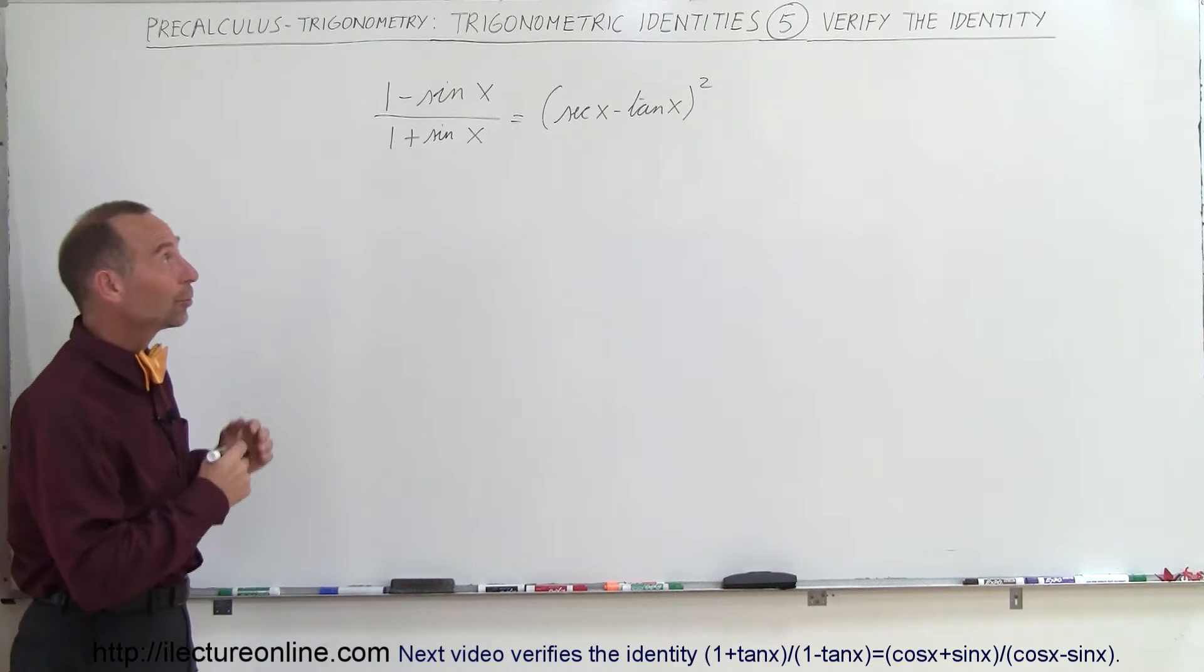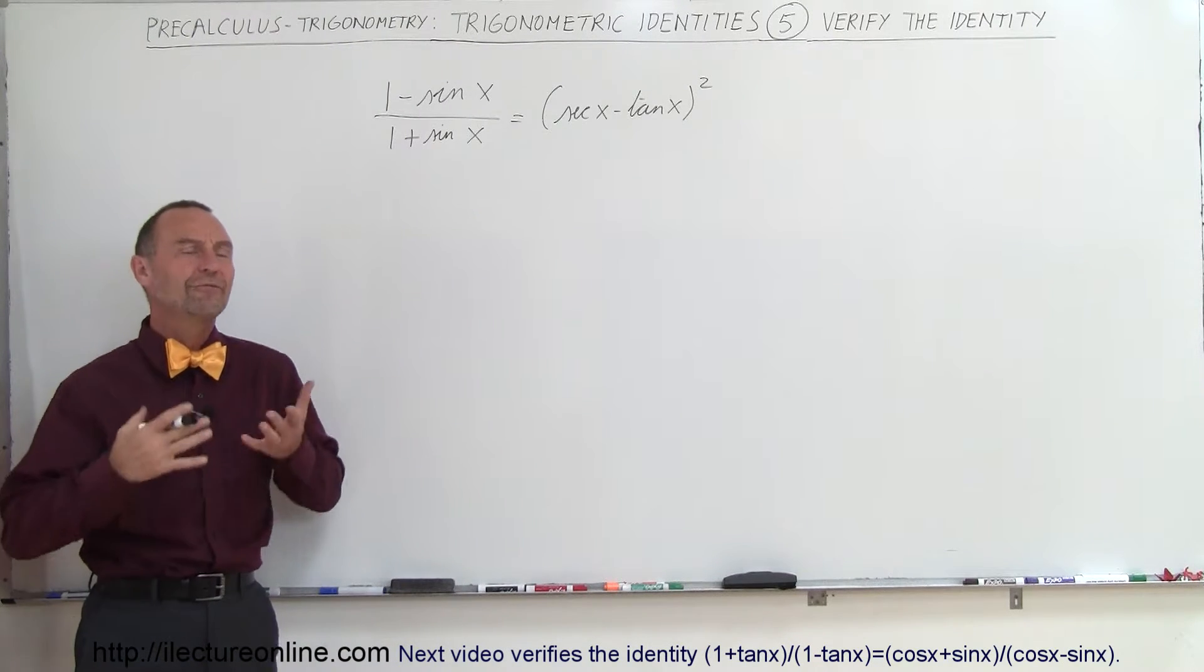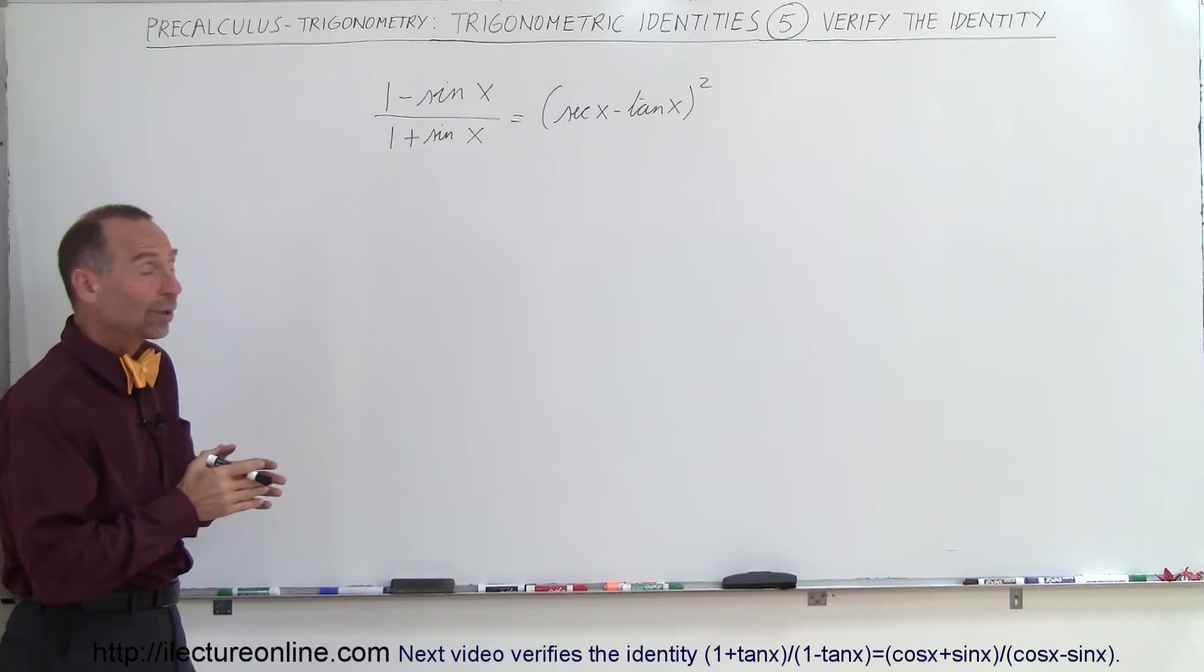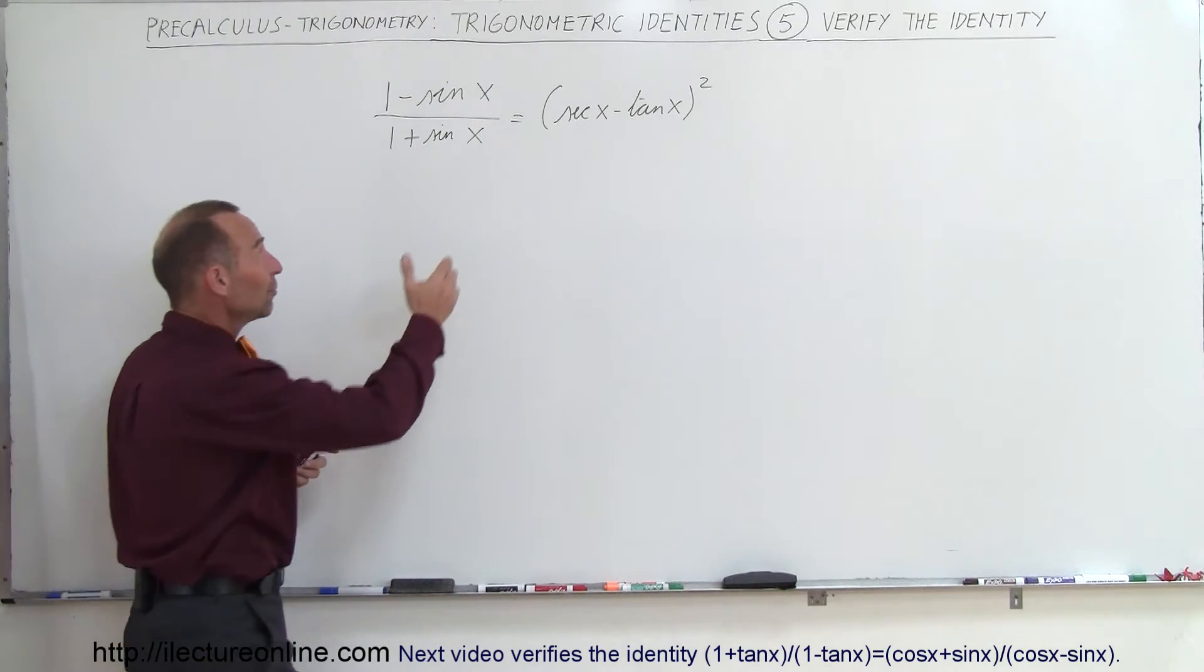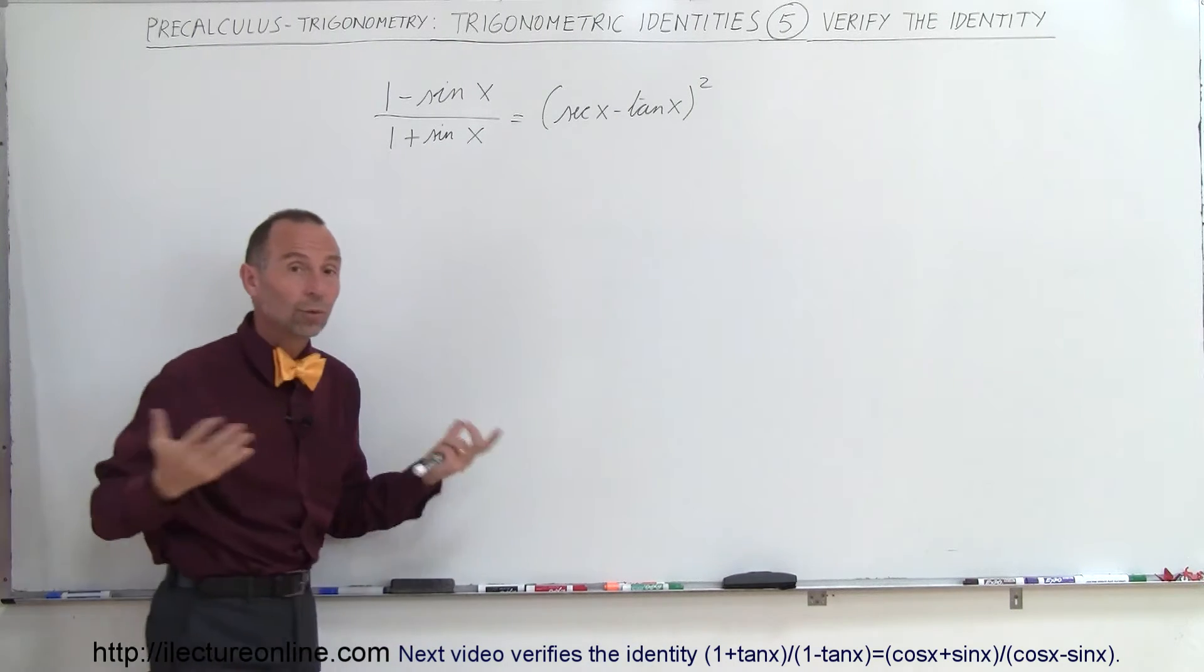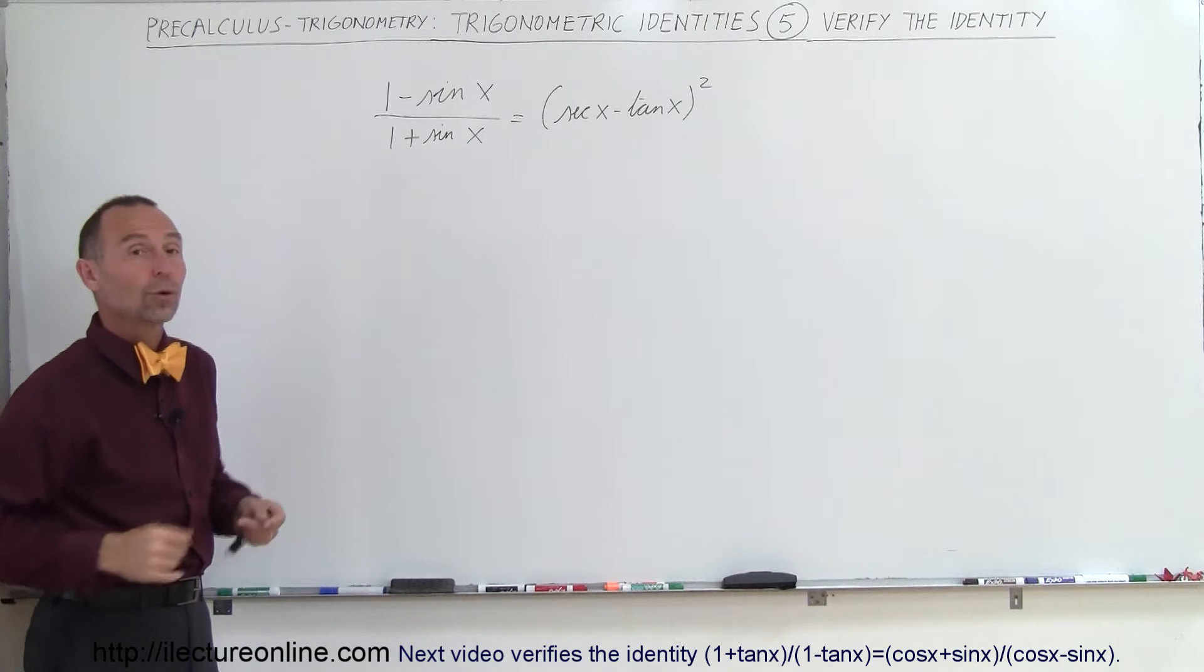Welcome to ElectronLine, and now we're going to do a different kind of problem called verifying the identity. When they ask you to verify the identity, what they're asking you to do is to take what they gave you here, the equation, and show that the left side indeed equals the right side. We're trying to show that this is indeed a true equation.